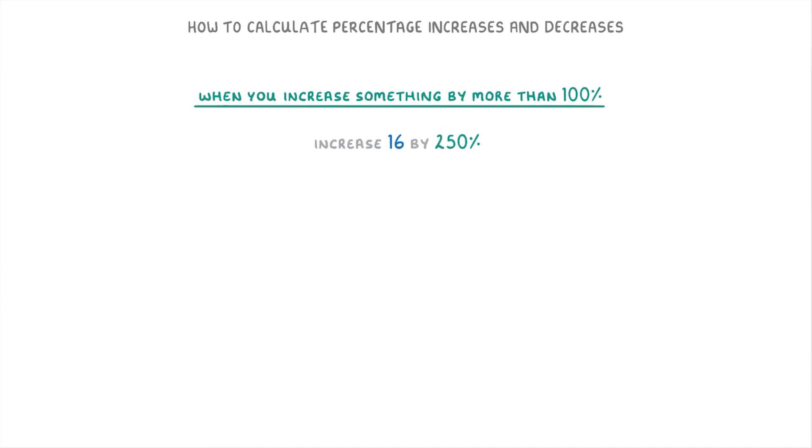Another weird one is when you increase something by more than 100%, like increasing 16 by 250%. 250% is equivalent to 2.5. So to find our multiplier, we'd do 1 plus 2.5 to get 3.5. And then we'd have to do 16 times 3.5 to give us 56 as our final answer.